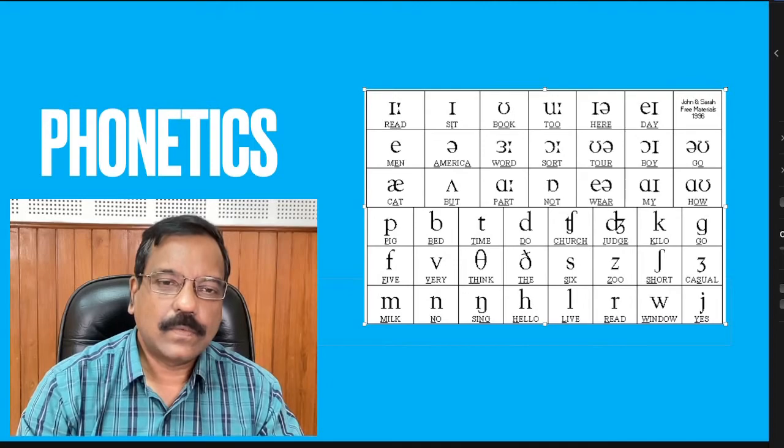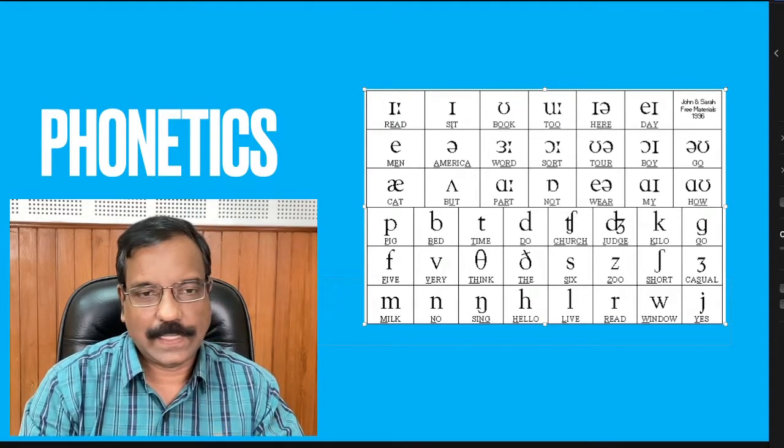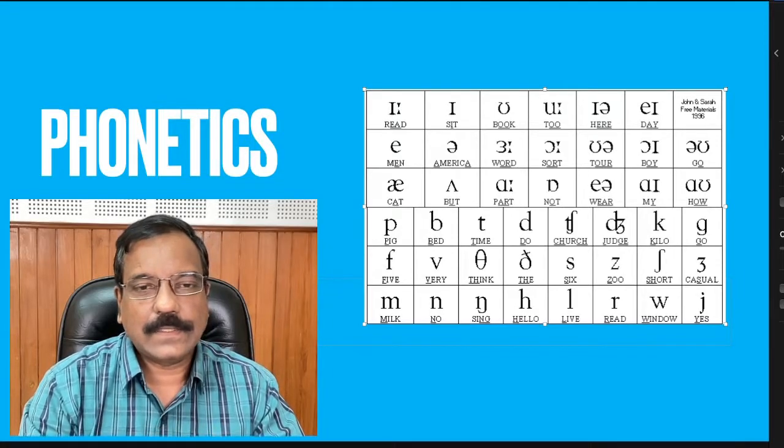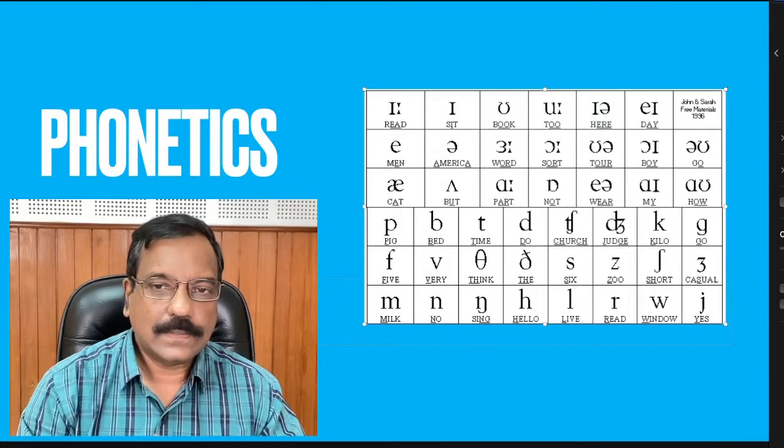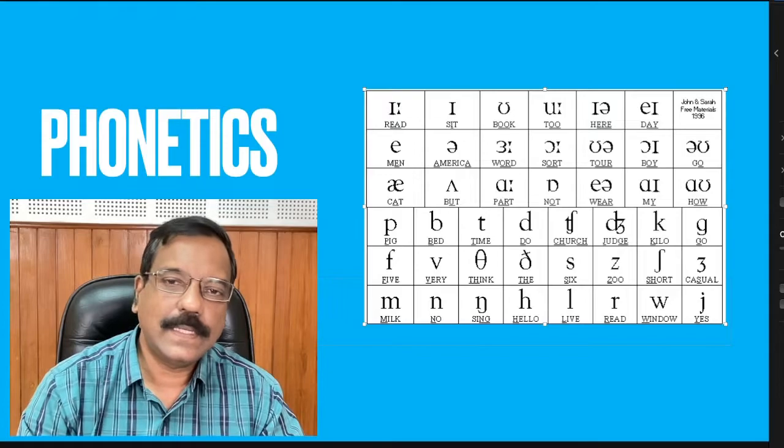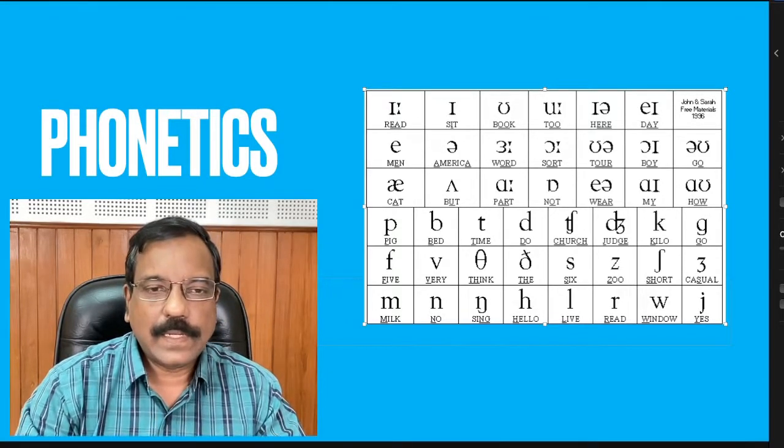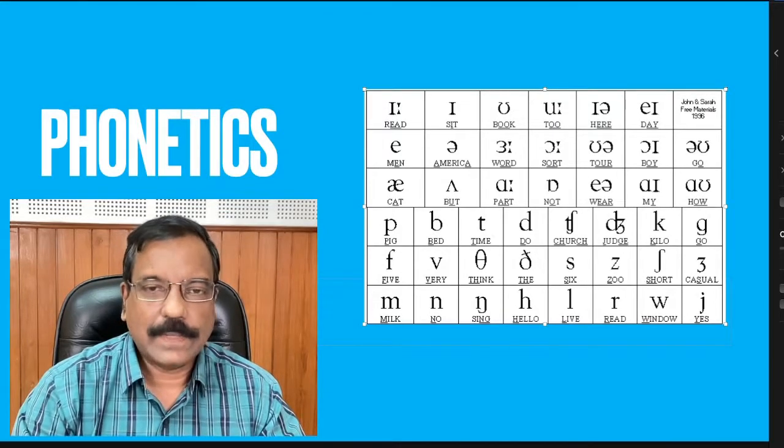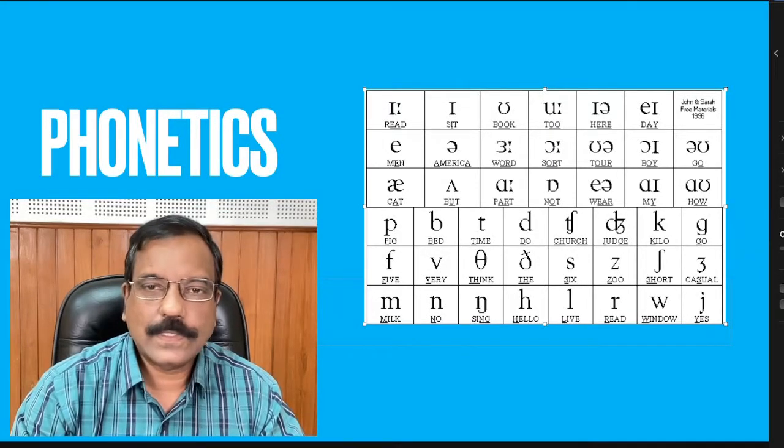So in phonetics, what we do is we look at all the sounds in English, and going beyond the letters of English, we look at the sounds of English. And how do we study that? We study that by giving individual symbols for all the sounds that we have to study. So English has say 44 sounds.